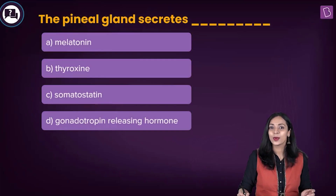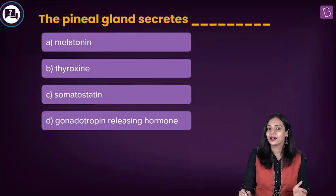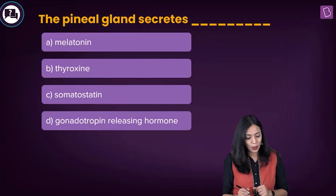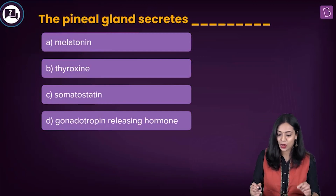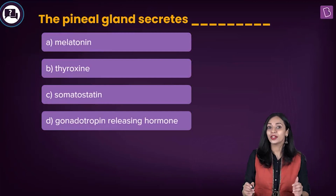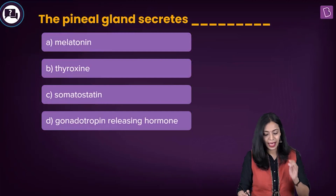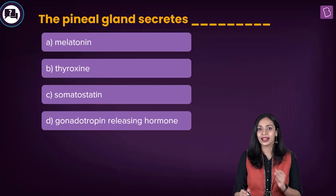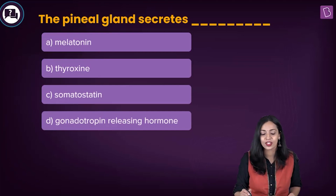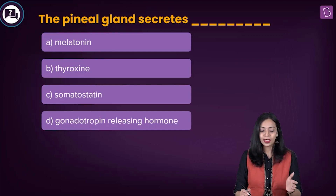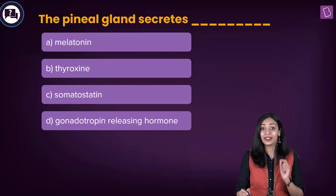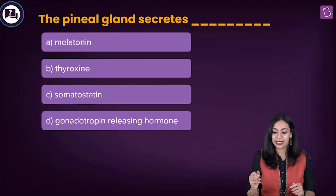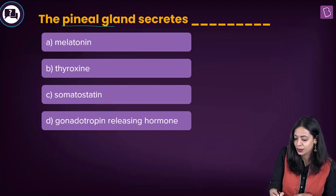Here's the next question: the pineal gland secretes what? The options are melatonin, thyroxin, somatostatin, and gonadotropin releasing hormone (GnRH). Among the four options, we have to find out which hormone is secreted by the pineal gland.